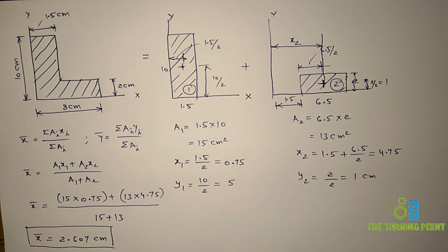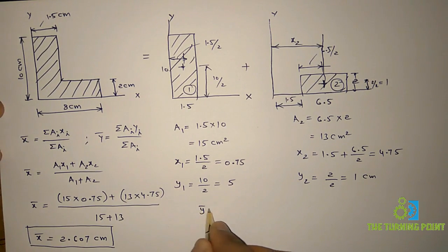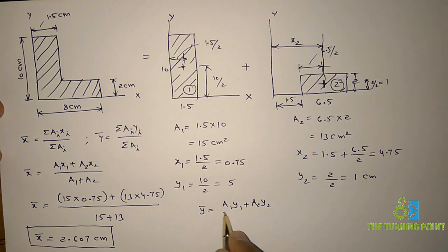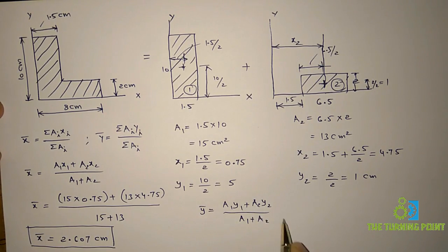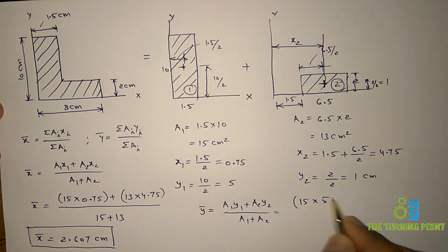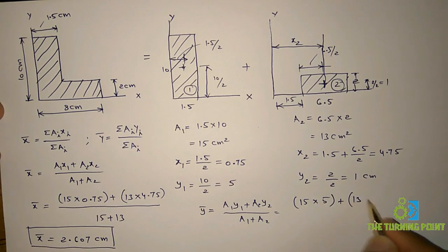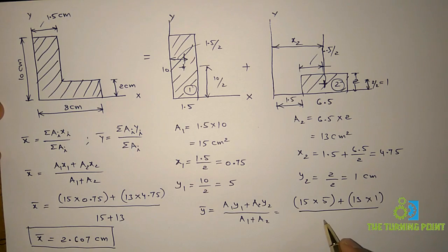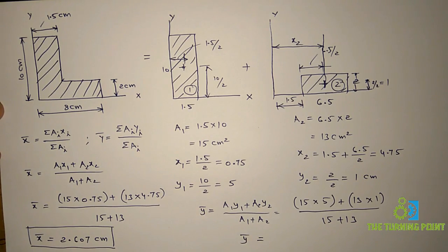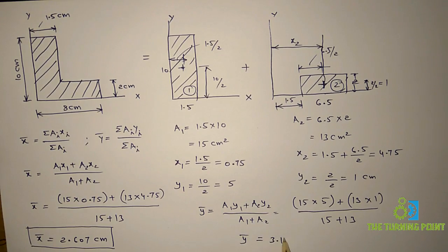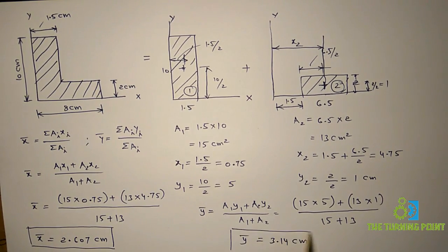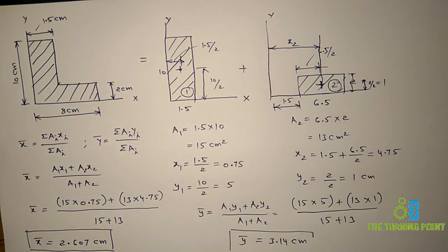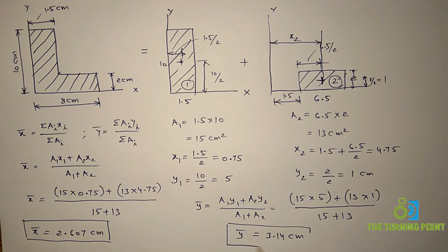Similarly, to find ȳ, we use: ȳ = (a1·y1 + a2·y2) / (a1 + a2). Substituting: a1 is 15, y1 is 5, a2 is 13, y2 is 1, divided by (15 + 13). Simplifying gives ȳ equal to 3.14 centimeters. This is the y centroidal coordinate.